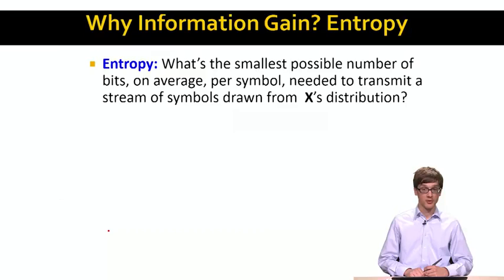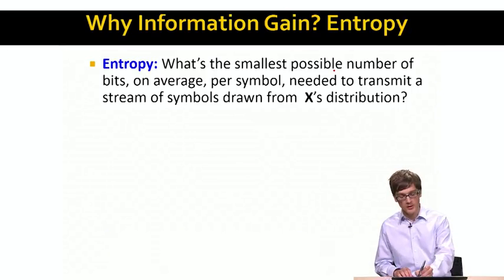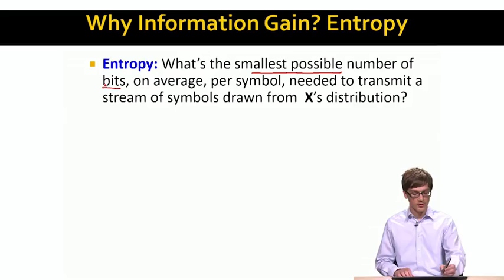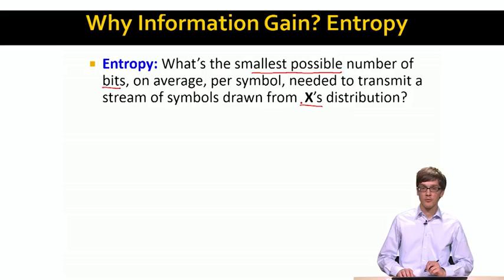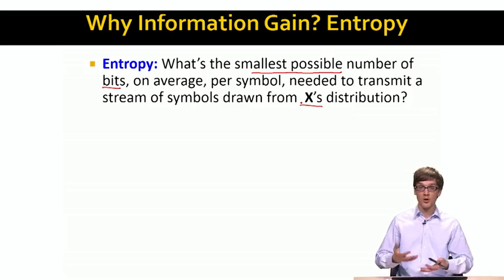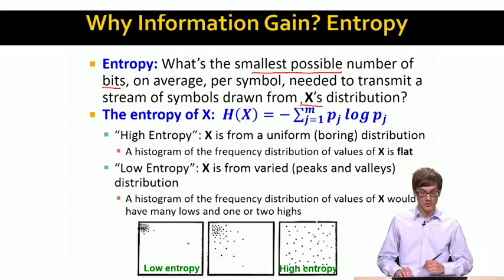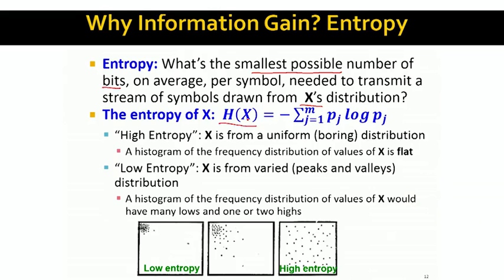In order to arrive at information gain, we first need to define the concept of entropy. Entropy is the smallest possible number of bits on average that we have to transmit or encode per symbol, such that if we get a symbol drawn from the distribution of x. So the idea is, how much noise or how variable is the distribution x? How do we measure the entropy?